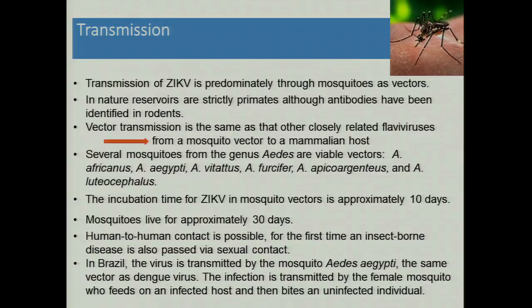Transmission is predominantly through mosquitoes as vectors, spread like dengue, yellow fever, and chikungunya. In nature, primates and rodents have antibodies to Zika virus. Like other flaviviruses, it requires a mosquito vector and a mammalian host. Many Aedes mosquitoes are responsible; in Brazil, the Aedes aegypti — the polka-dot mosquito — transmits the virus. Several other mosquitoes exist here in Southern California that could transmit it, though climatic conditions differ. The incubation time in the mosquito is about 10 days, and mosquitoes only live about 30 days, so they must be very efficient spreaders.